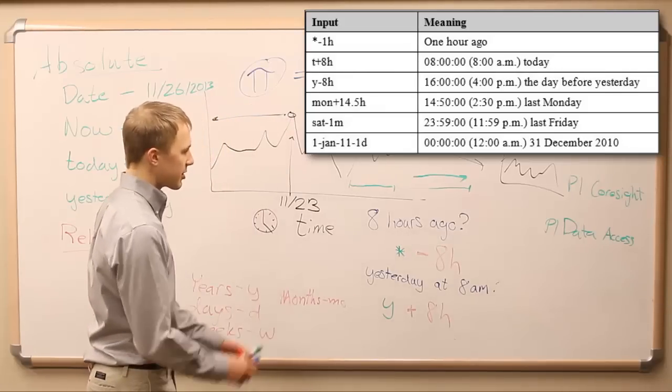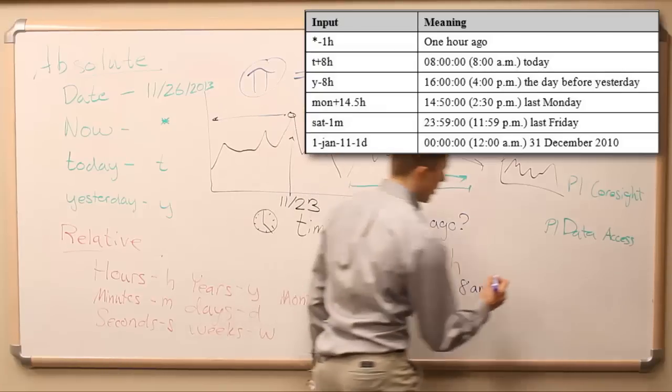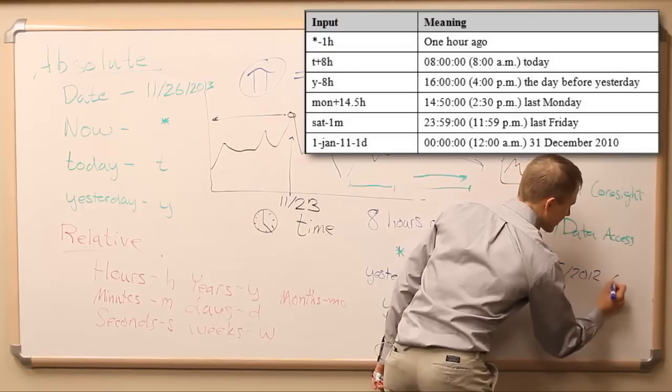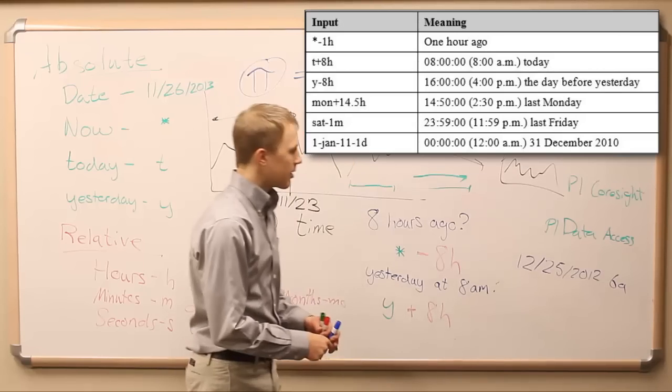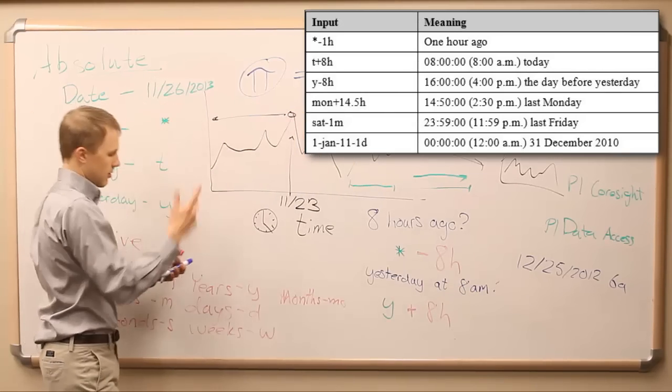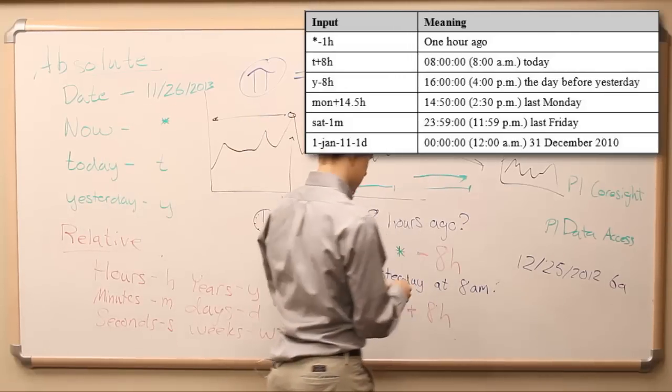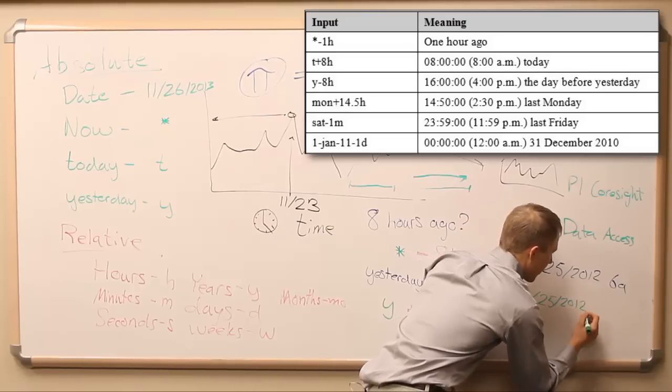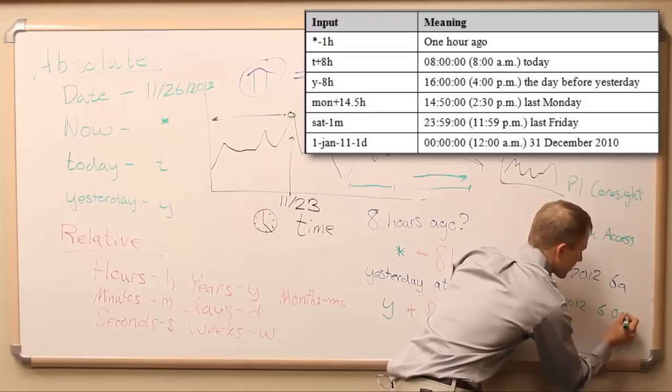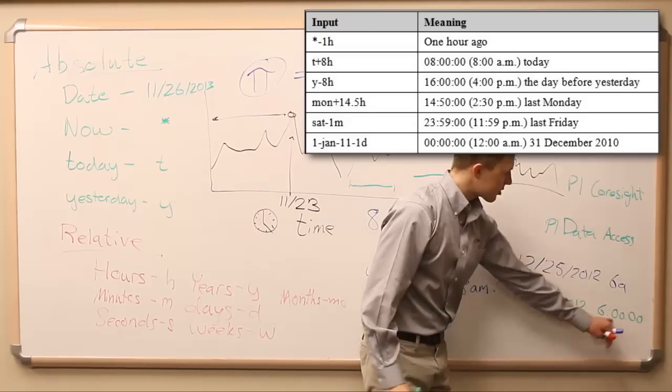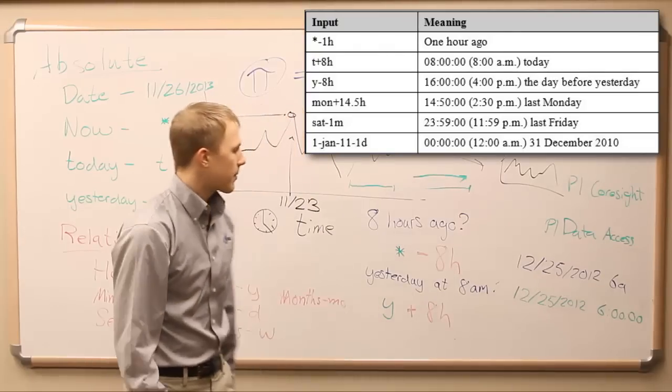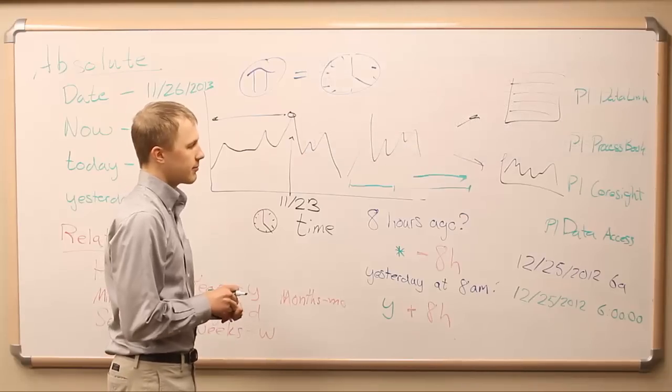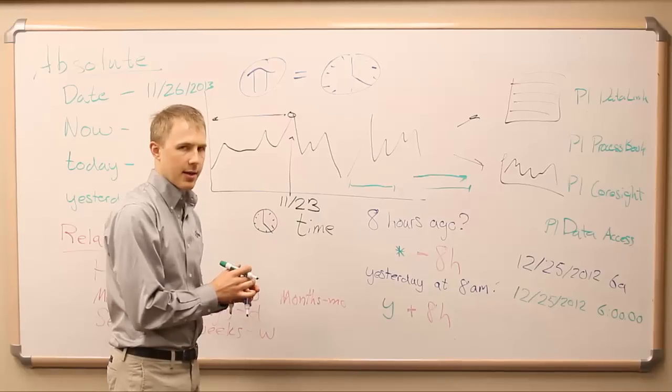If I know that there's a particular date and a particular time, so I want to know the, on December 25th of last year at 6 a.m., I want to know what the value was. Well, now for that, we're going into a very specific date, so I can start using a specific date. I could say 12, 25, 2012, and then I'd write in space six o'clock. Now, we can also shorthand this if you just were to write in like six or six o'clock, that would work as well.